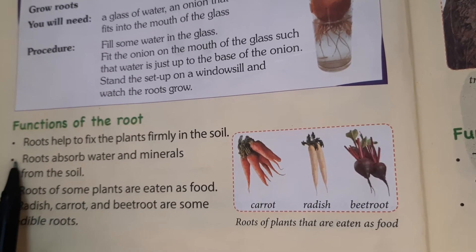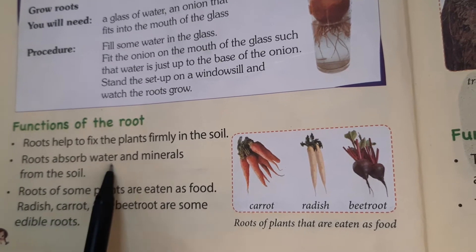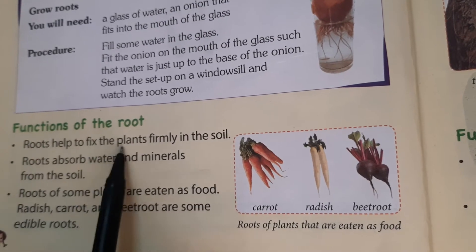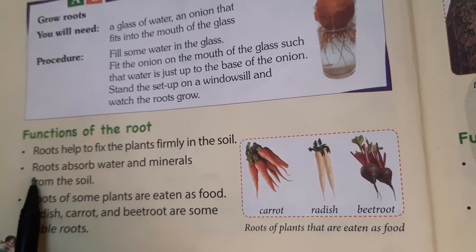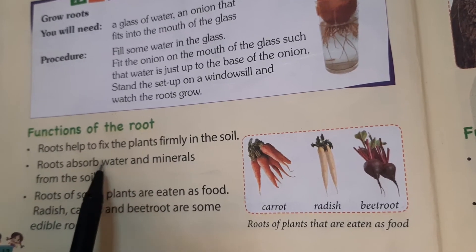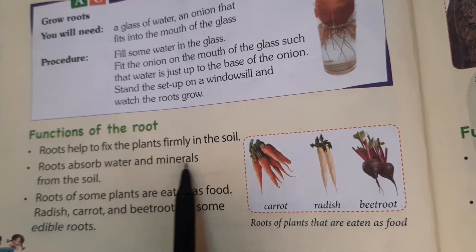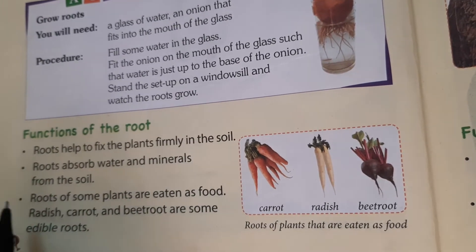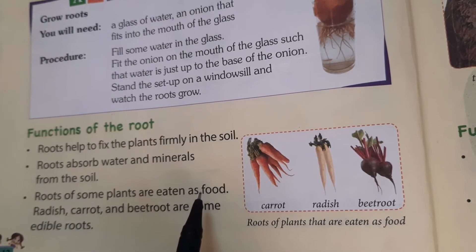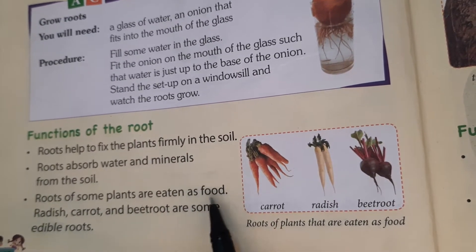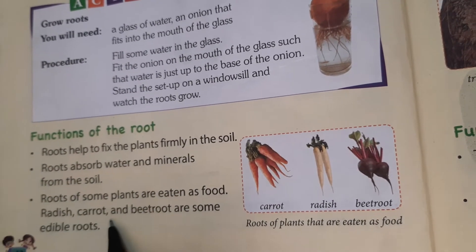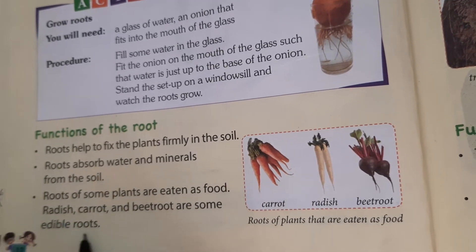The second function of roots is: roots absorb water and minerals from the soil. When the roots are fixed in the soil, they absorb water and minerals from it. The third function of roots is: roots of some plants are eaten as food. There are many roots that we eat — for example, radish, carrot, and beetroot. These are edible roots.